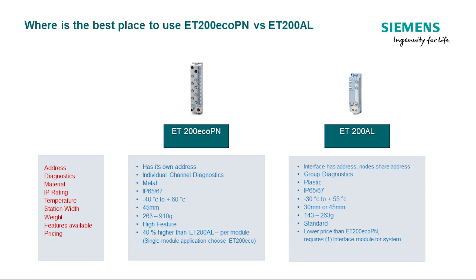Even though both products are I/O drops, they are very different products. The first big difference is that the ET200EcoPN has its own address, whereas the ET200AL has an interface module which holds the address. Each of the I/O drops are just like slots in a rack — they do not have individual drop addresses.